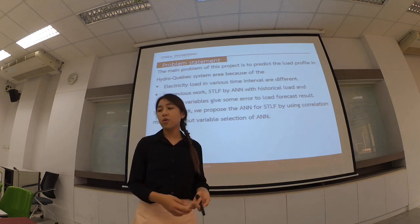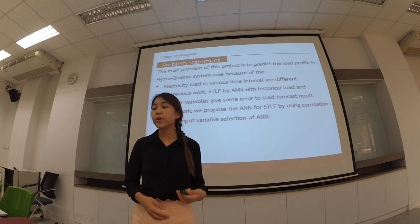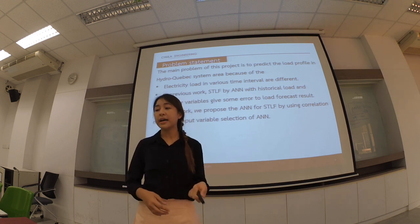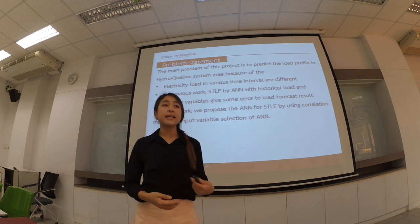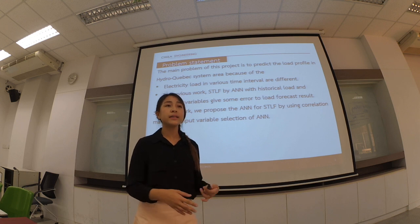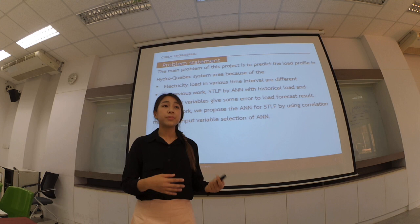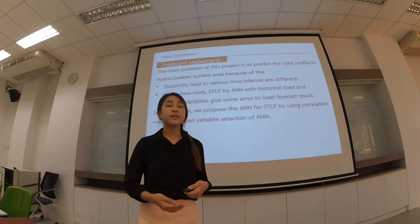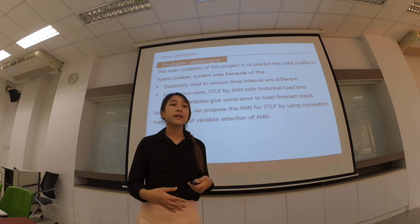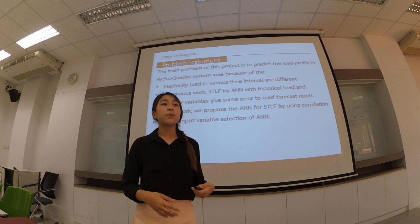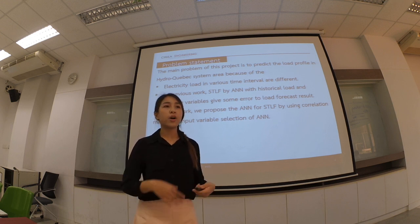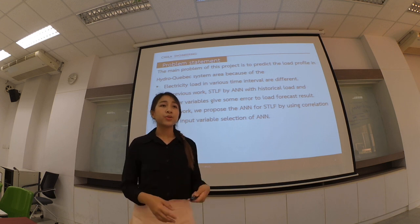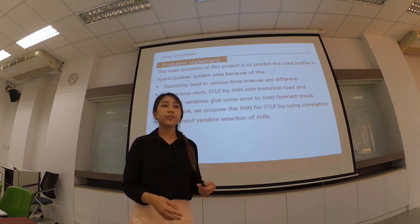Problem statement: how to predict the load profile in the hydroelectric system is difficult because electricity load demand varies over time and the load pattern is not the same at each time step. In previous work, the author proposed an ANN for load forecasting using historical load data and weather variables — wind speed, cloud cover, and temperature — as ANN inputs. The problem is that load data ahead for two or three days is not available, so the author must use estimated load data as ANN input, which introduces error into the model.